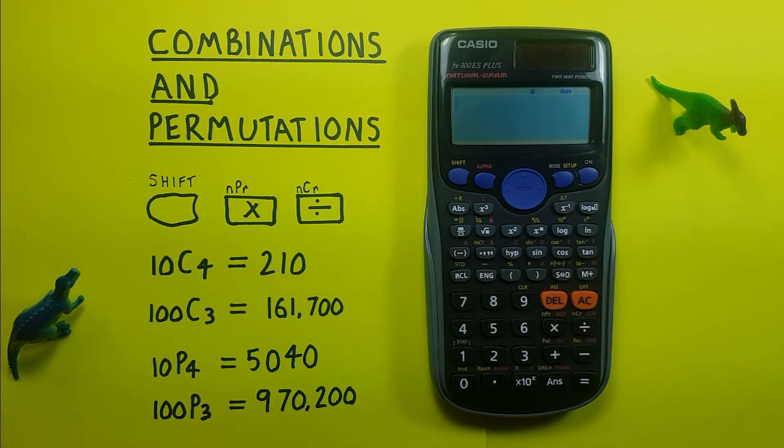We'll start with combinations. A combination is when we choose a certain number of objects from a larger set and the order that they're chosen does not matter.